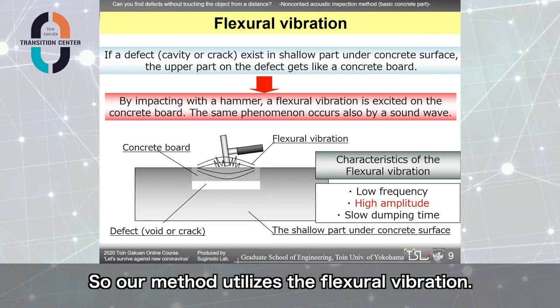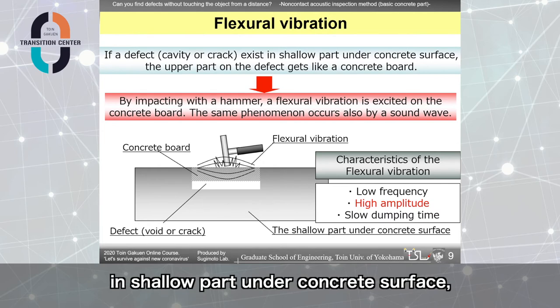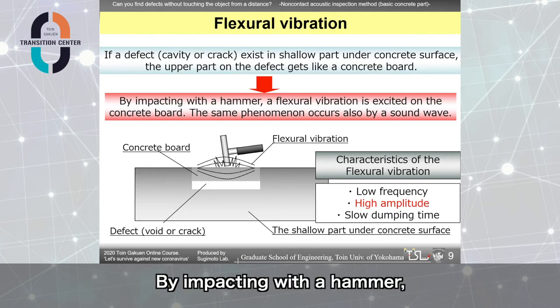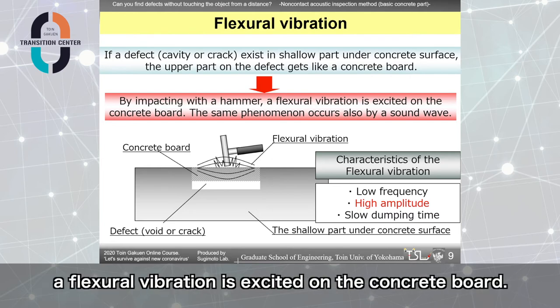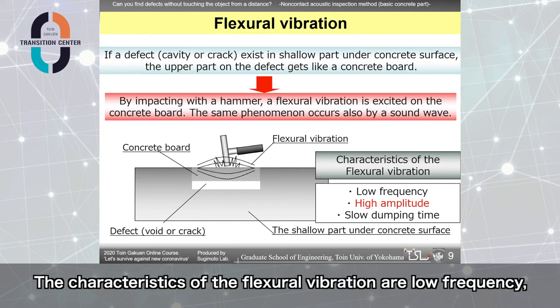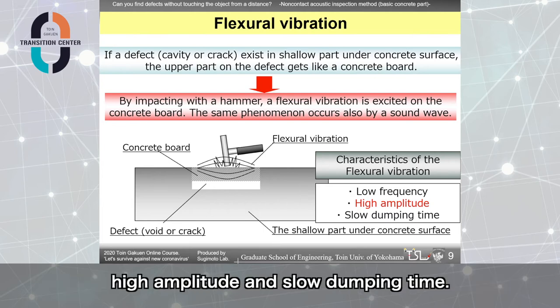So, our method utilizes flexural vibration. If a defect exists in shallow part under concrete surface, the upper part on the defect gets like a concrete plate. By impacting with a hammer, a flexural vibration is excited on the concrete plate. The same phenomenon occurs also by a sound wave. The characteristics of the flexural vibration are low frequency, high amplitude, and slow damping time.